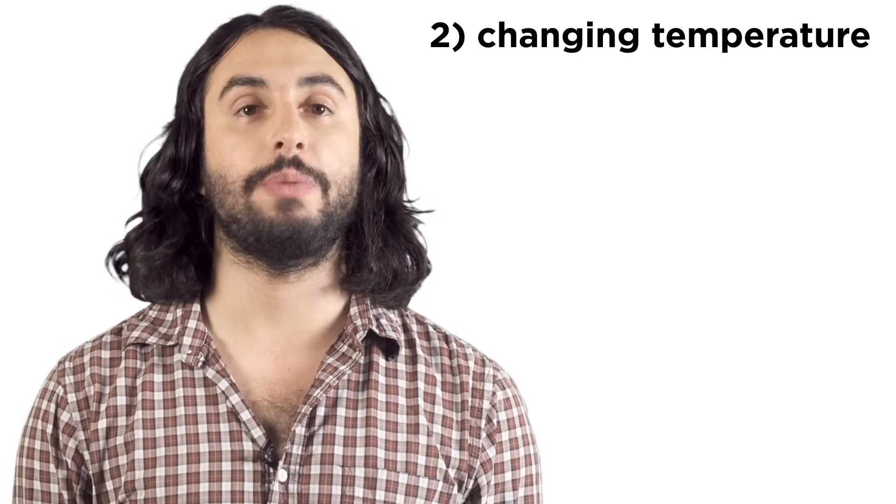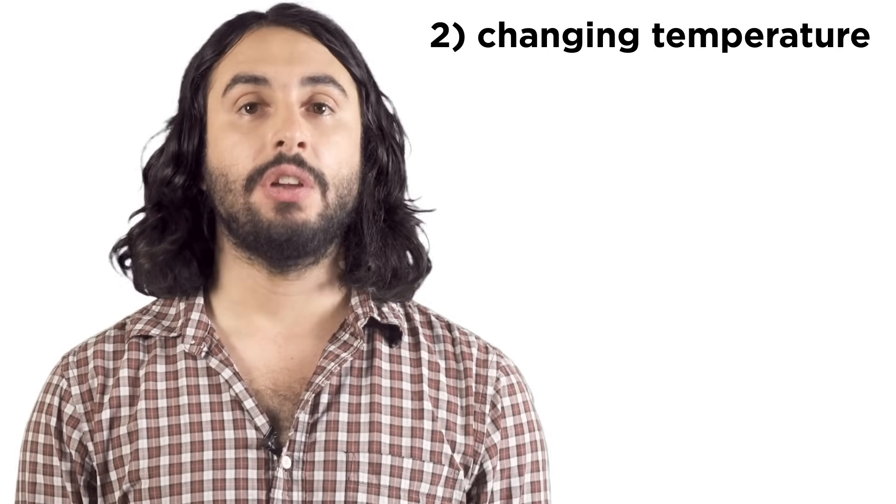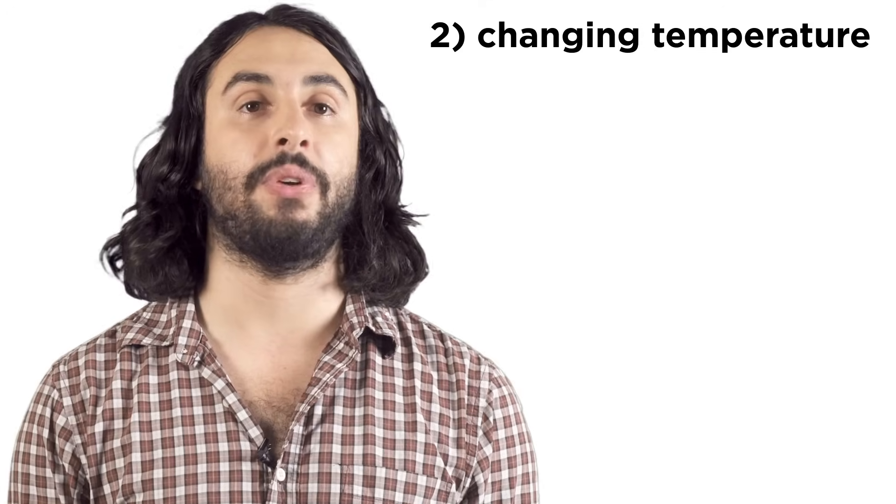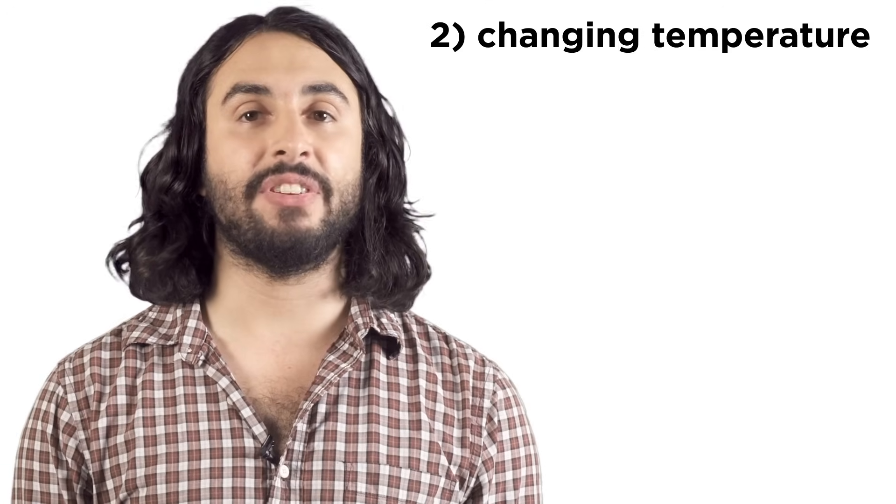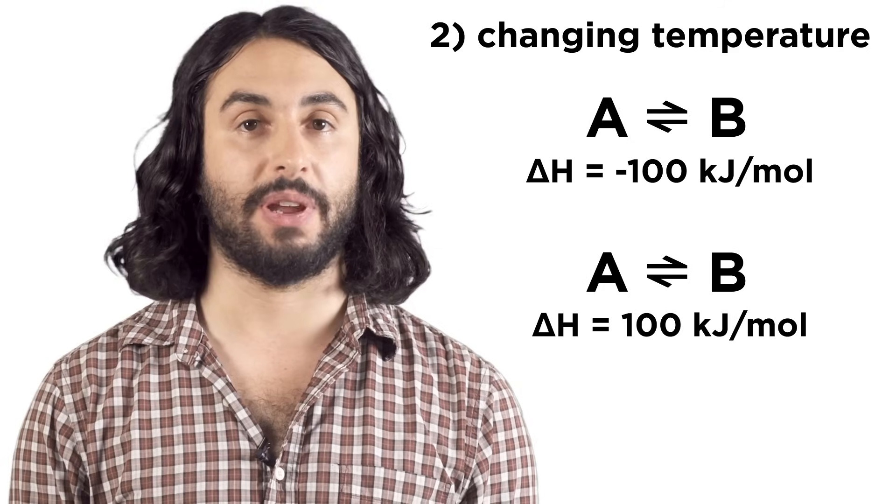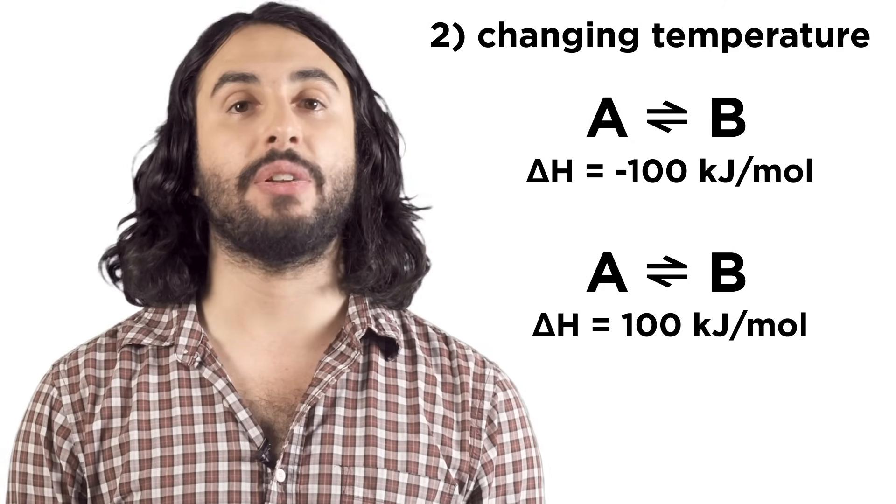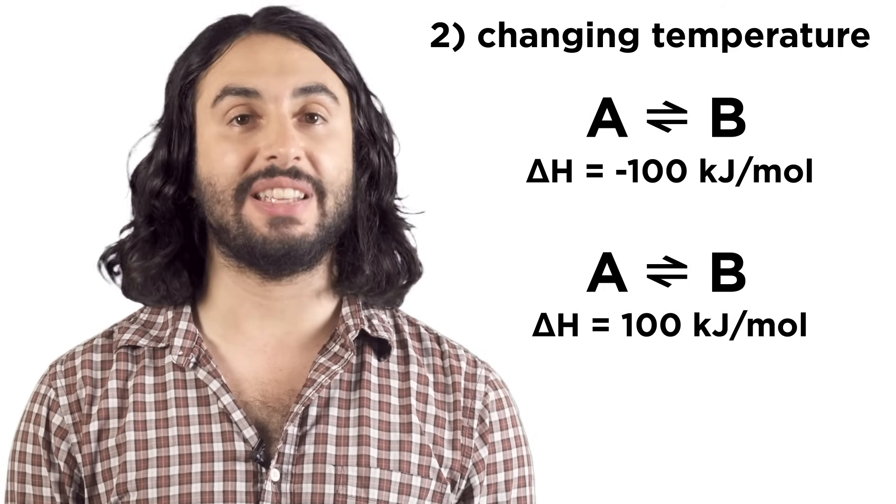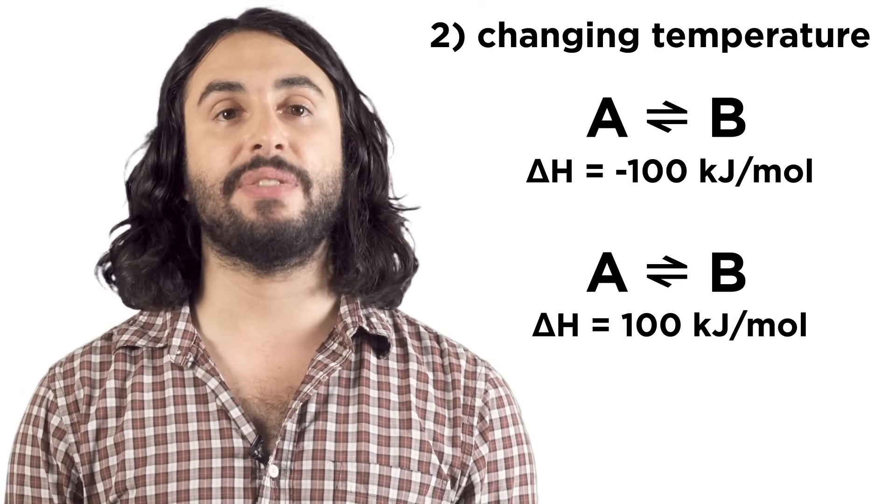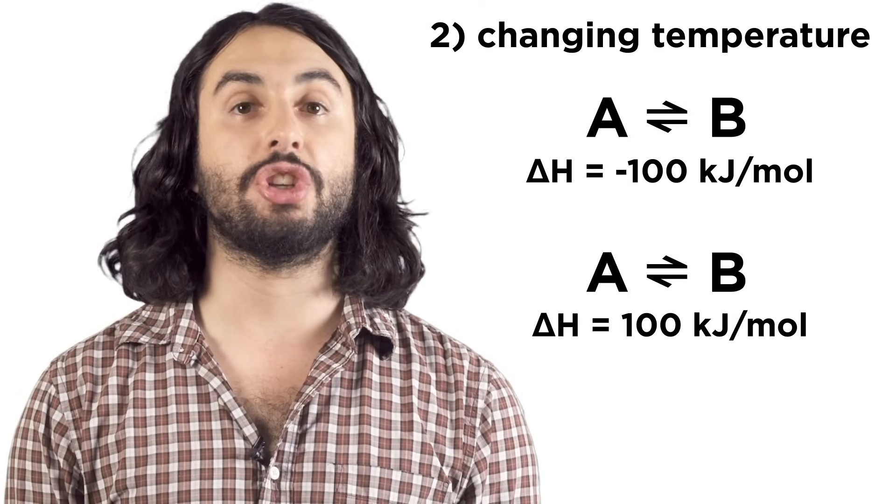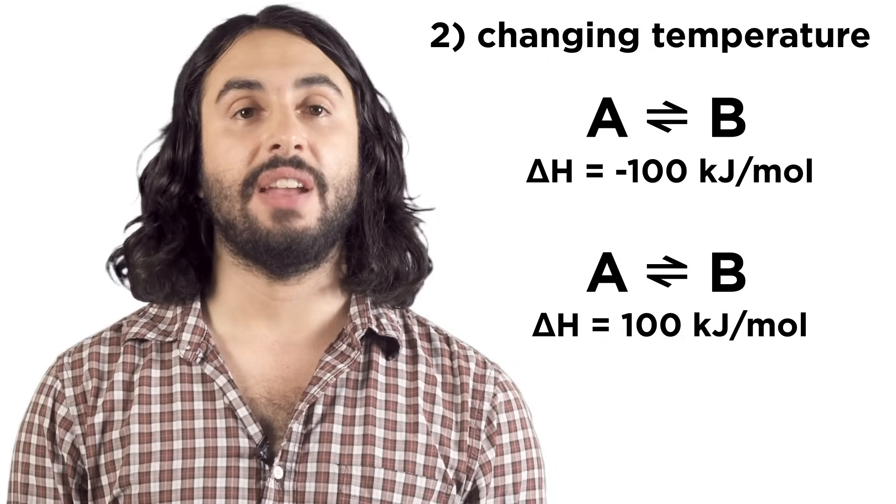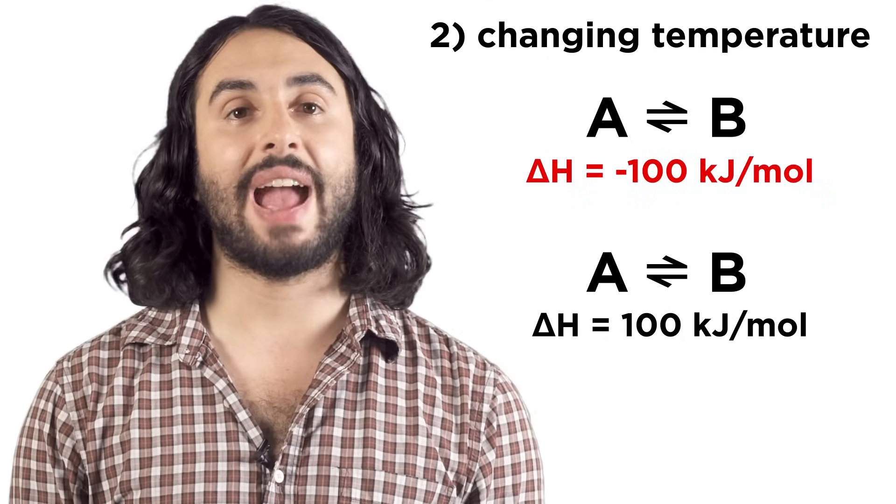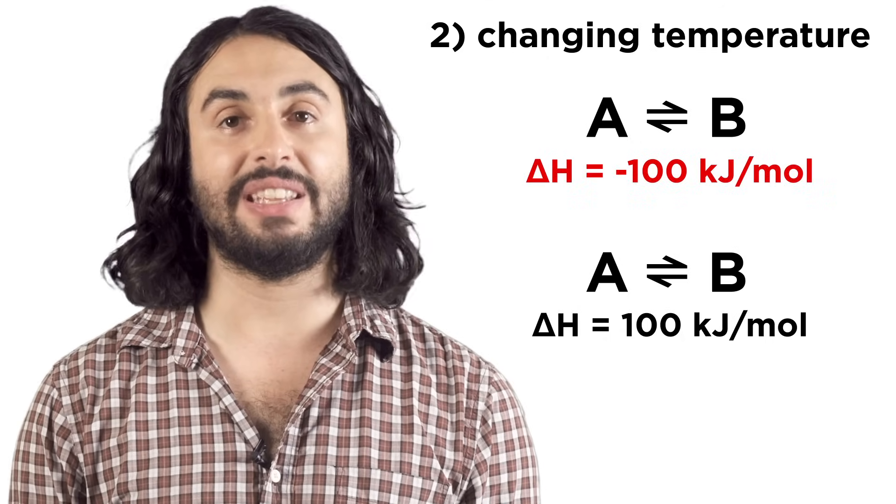Another stress would be to change the temperature. To see how this would affect an equilibrium, we have to see whether a given reaction is exothermic or endothermic. This tells us whether a reaction absorbs or releases energy and is signified by delta H, the change in enthalpy.